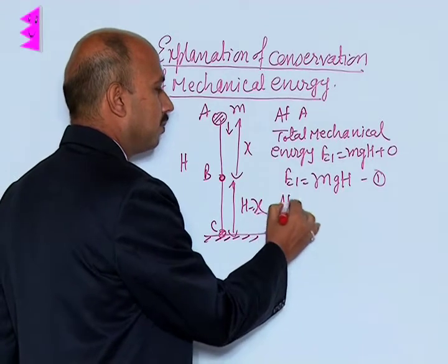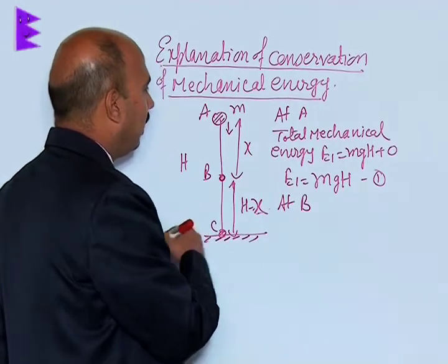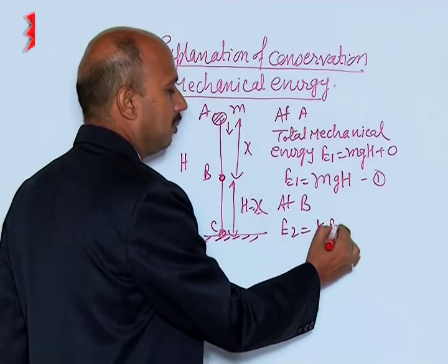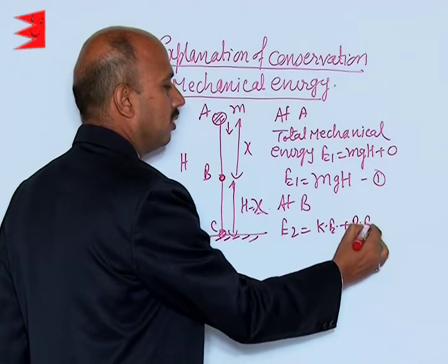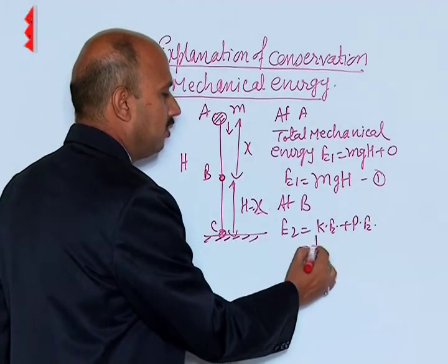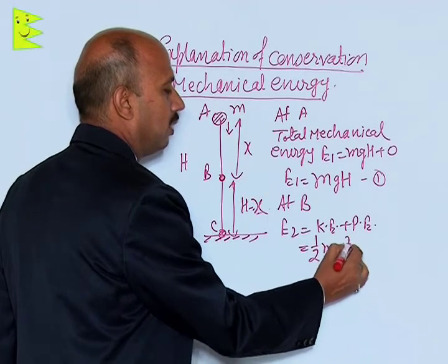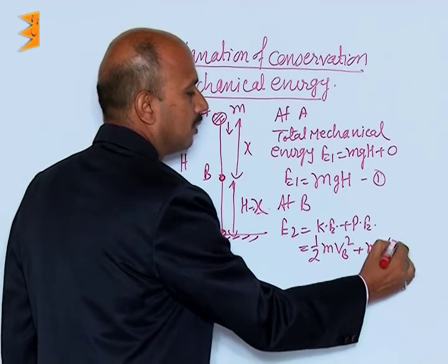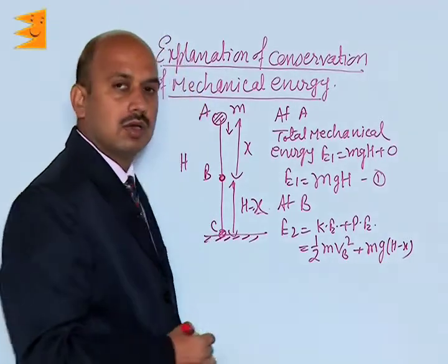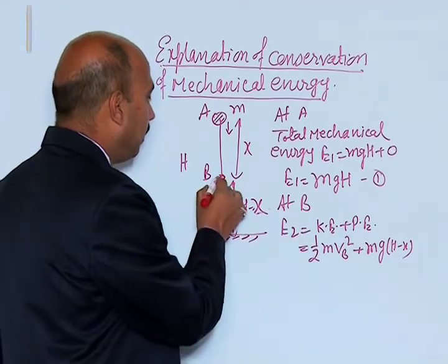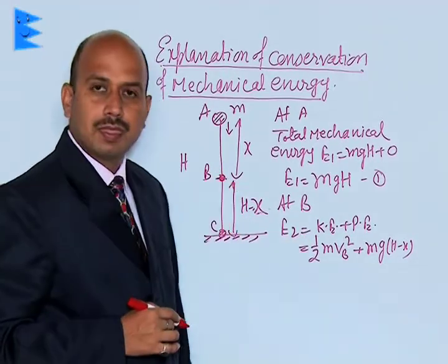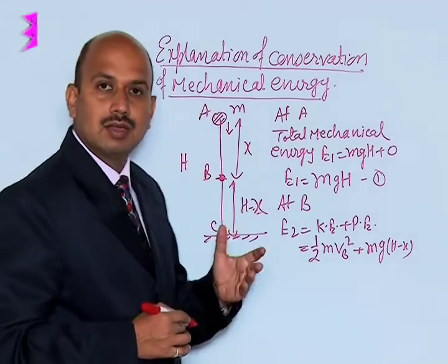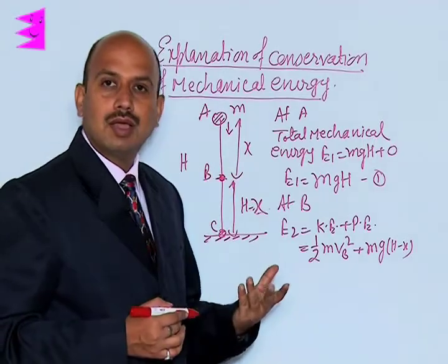Now, total energy at B. At B we can write E2 is equal to kinetic energy plus potential energy. Kinetic energy is half m v_b squared, and potential energy is mg(h minus x). To find velocity at B, the loss in potential energy equals the gain in kinetic energy.